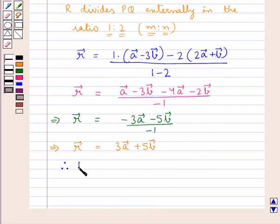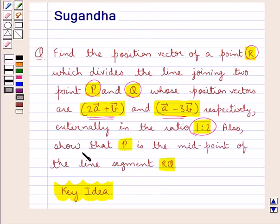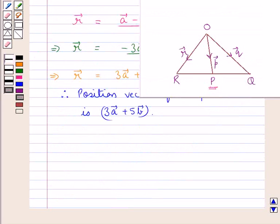This simplifies to: vector A minus 3 vector B minus 4 vector A minus 2 vector B, all upon minus 1, which gives minus 3 vector A minus 5 vector B upon minus 1. Therefore, vector R equals 3 vector A plus 5 vector B. So the position vector of point R is 3 vector A plus 5 vector B. Now, after this we have to show that point P is the midpoint of the line segment RQ.